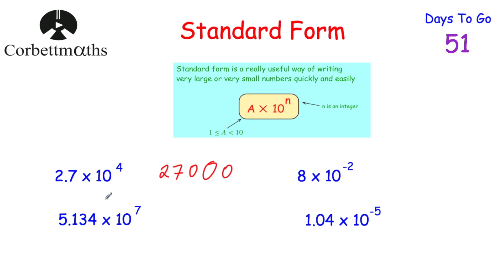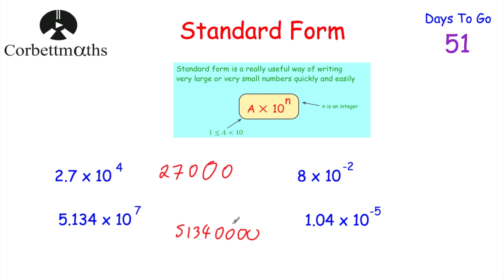Next: 5.134 × 10⁷. We need to move the digits seven columns to the left. Moving three columns gives 5,134, then four more columns gives 51,340,000. Let's check: starting from 5.134, moving the decimal point 1, 2, 3, 4, 5, 6, 7 places gives 51,340,000.